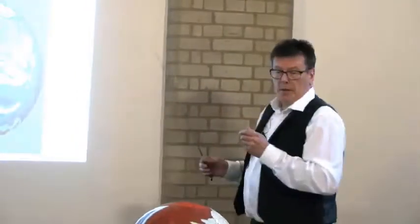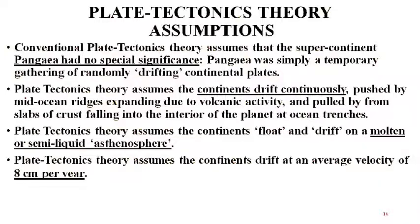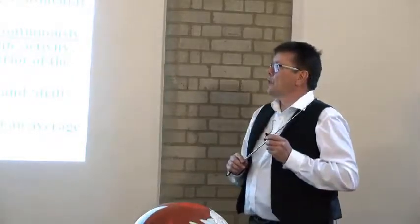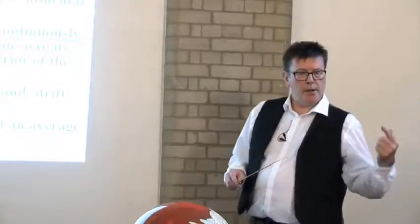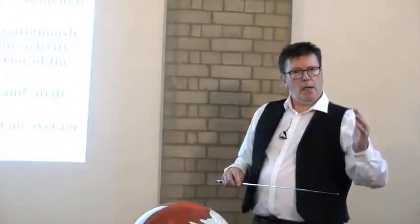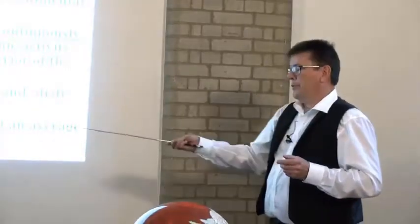Plate tectonics theory assumes that continents were moving around the planet a billion or two billion years ago. But I'm saying there's something very special about Pangaea and the clustering of those continents. The assumptions of plate tectonics are: Pangaea has no special significance, continents are moving all the time as a continuous process generated from inside the Earth, and continents are floating on some mobile layer in the outer mantle. Textbooks say it's about 8 to 10 centimeters per year — so you should be able to measure it.